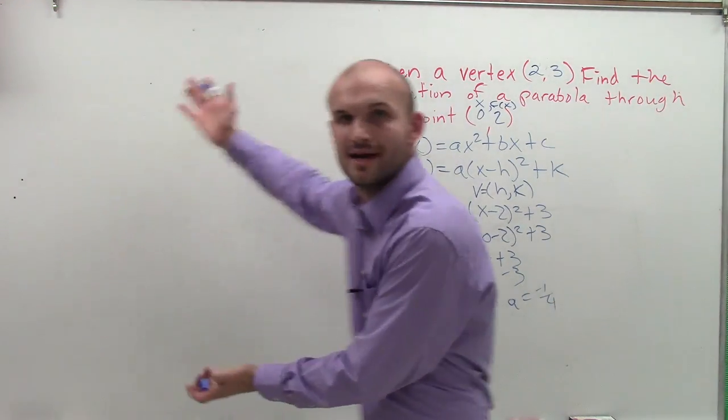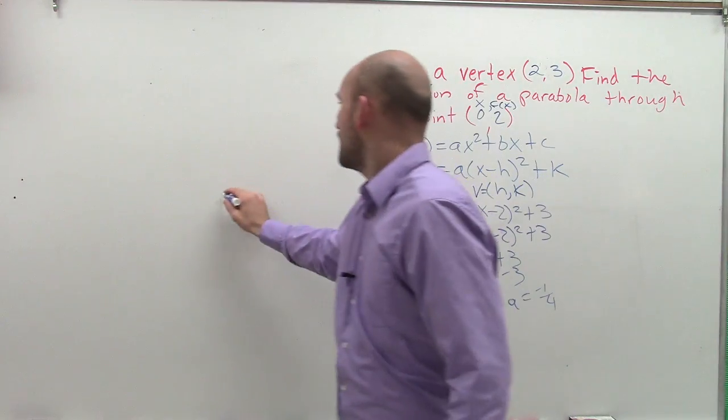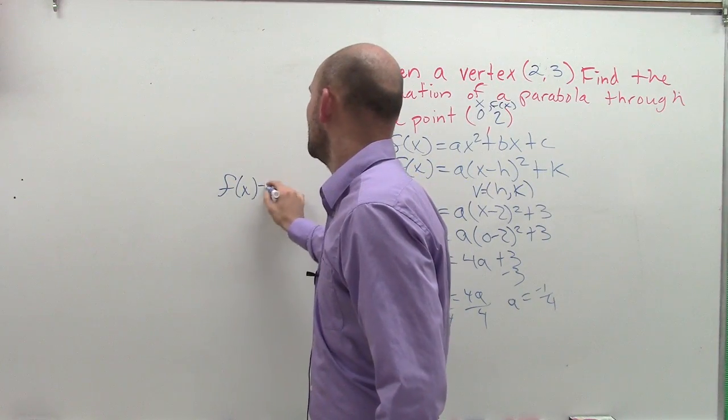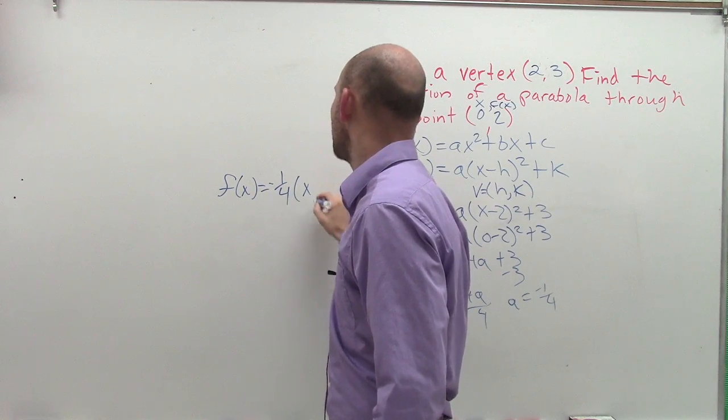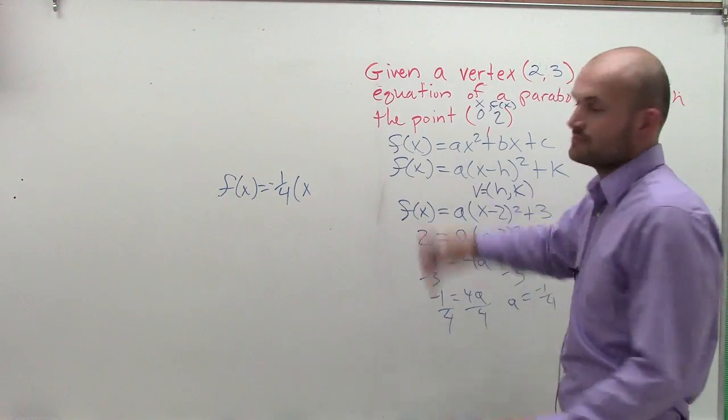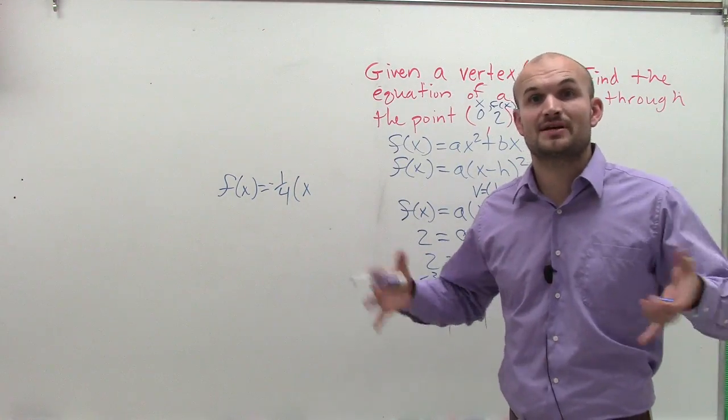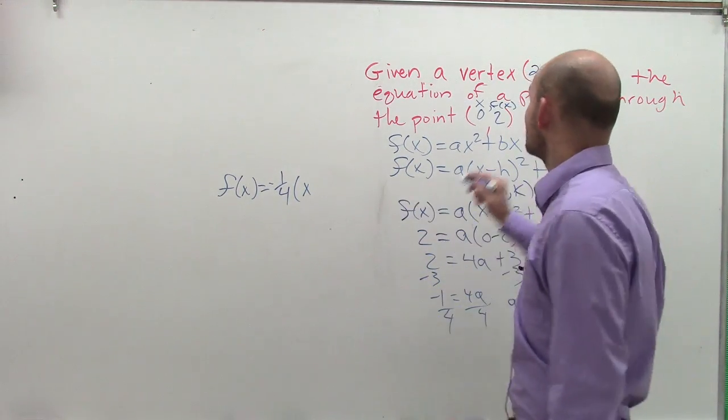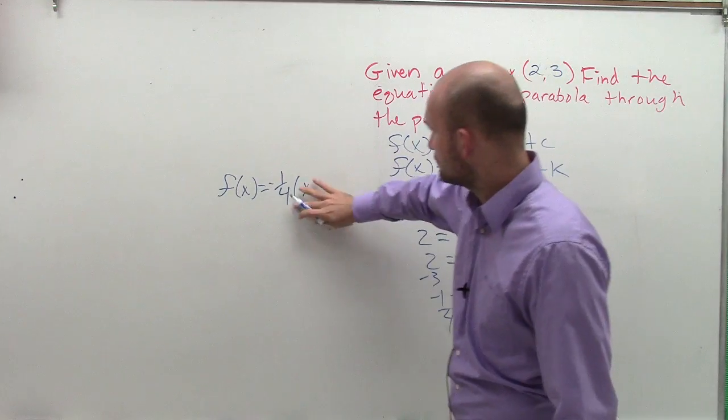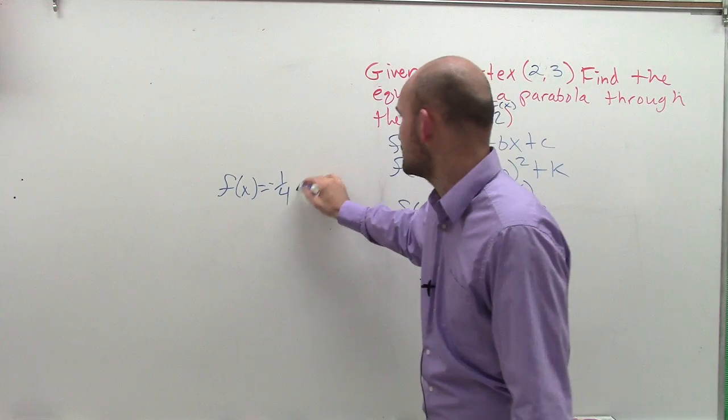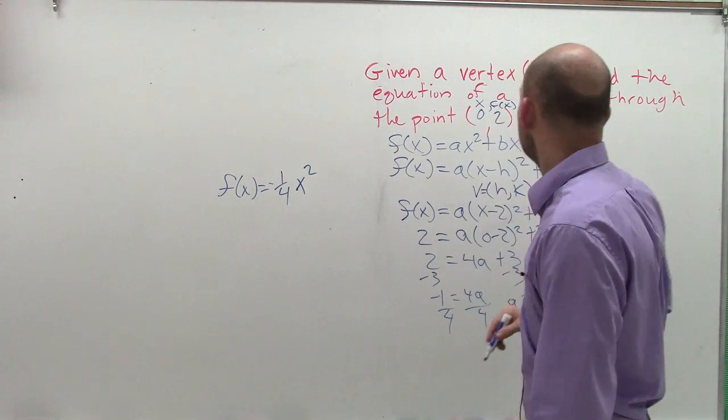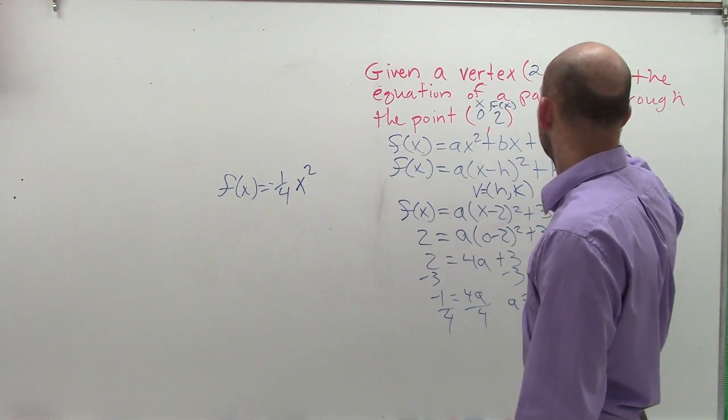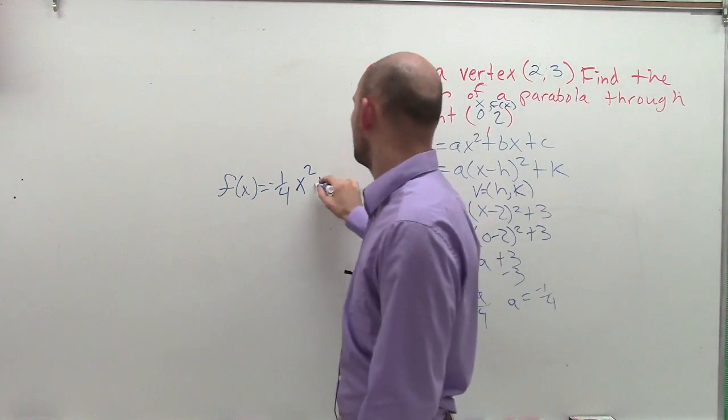To write my equation, I have all the space over here, so I'll use it. I can write f(x) equals my a, which is a negative 1 fourth, times x minus. Because remember, we're still going to go back to x and f(x) because our equation of a line contains infinite many points. x minus 0. So x minus 0 is just x. So we can write x squared. And where am I looking? For my k plus 2.